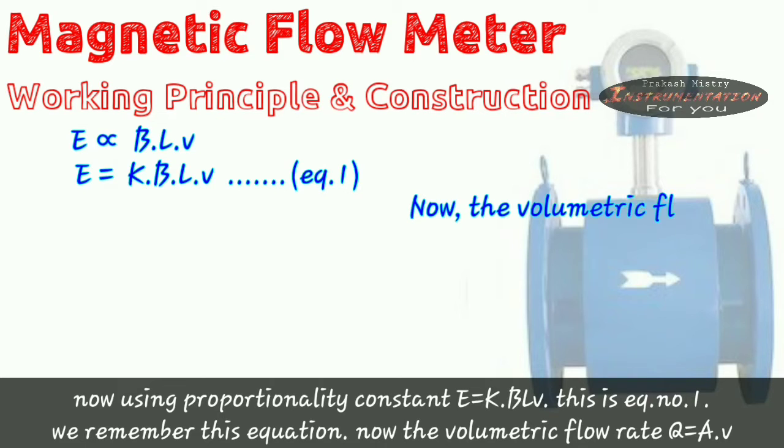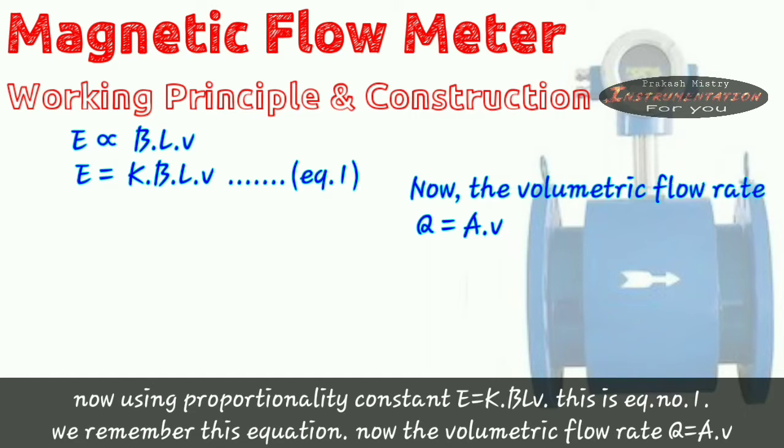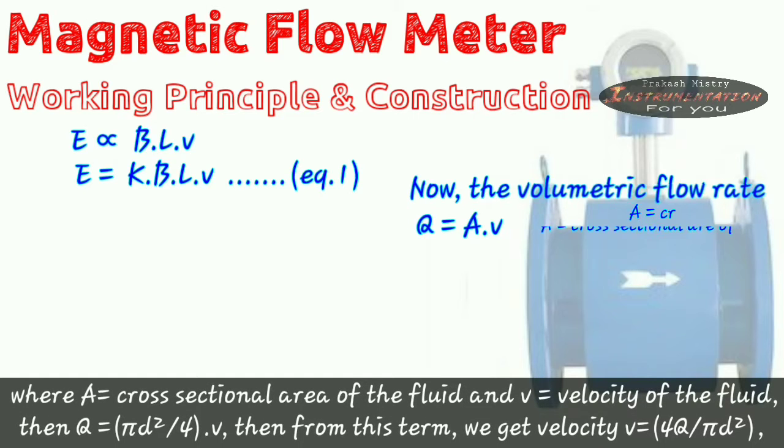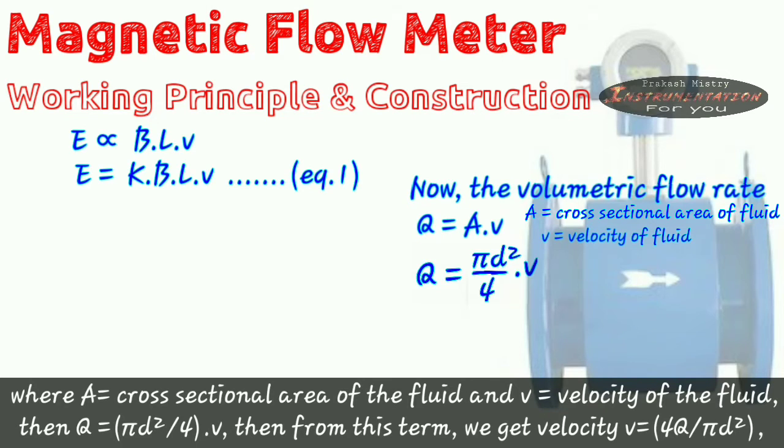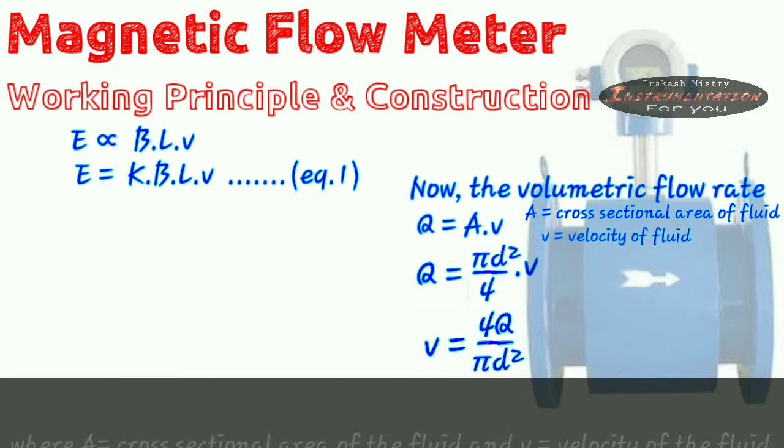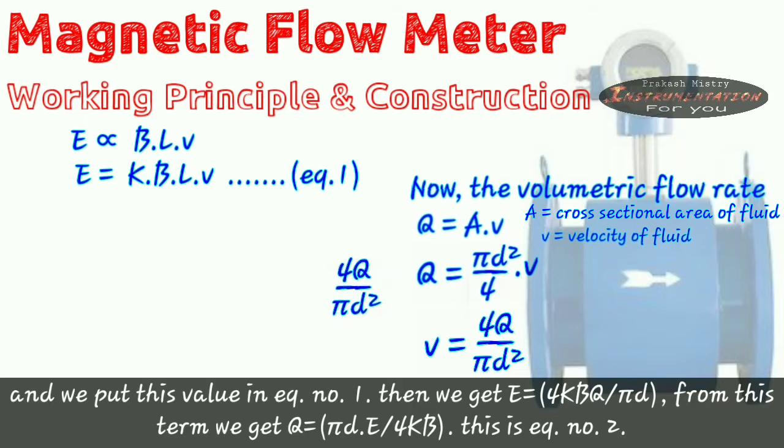Now the volumetric flow rate Q is equal to A into V. Where A is equal to cross sectional area of the fluid and V is equal to velocity of the fluid. Then Q is equal to Pi D square by 4 into V. Then from this term we get velocity V is equal to 4Q by Pi D square. And we put this value in equation one.